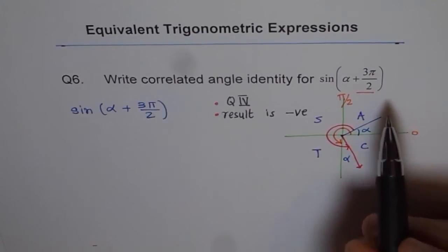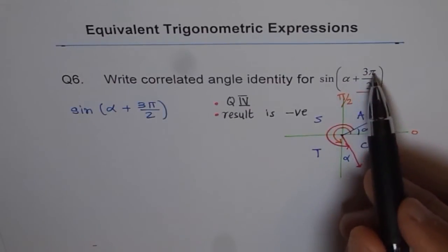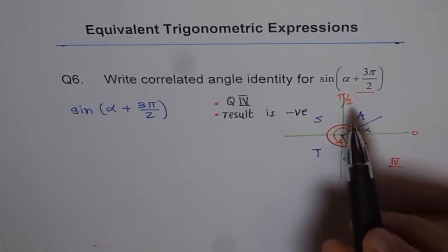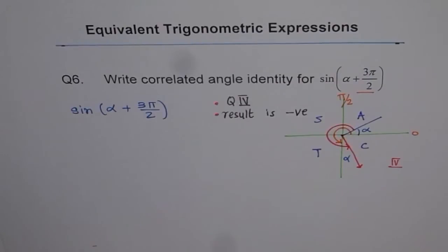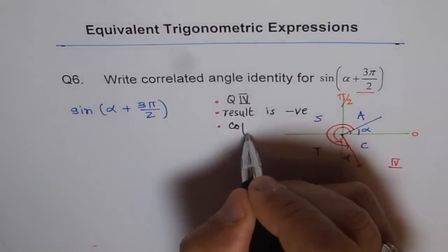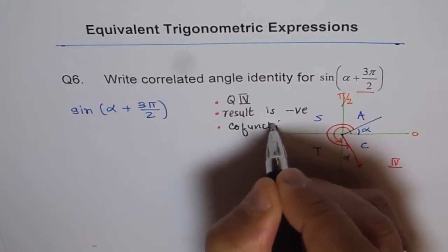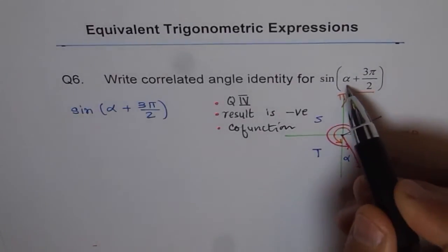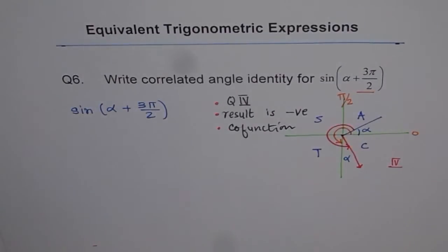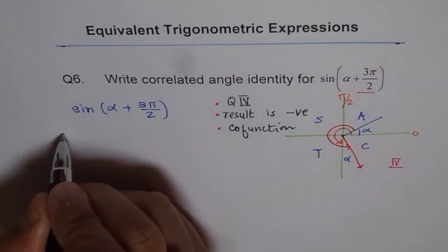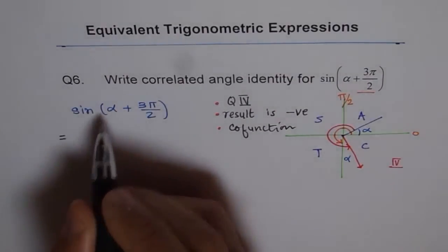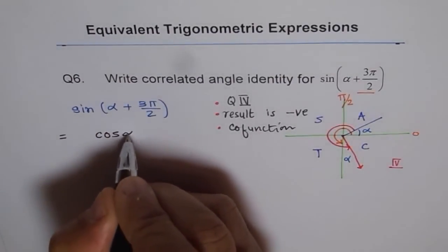Third thing: whenever you do pi by 2 plus or minus, or 3 pi by 2 plus or minus, it changes to a co-function identity. It becomes a co-function, meaning sine becomes cosine and cosine becomes sine of the angle alpha. So what we can do here, straight away, is write it as a co-function. So sine becomes cosine, and we will say cos of alpha.